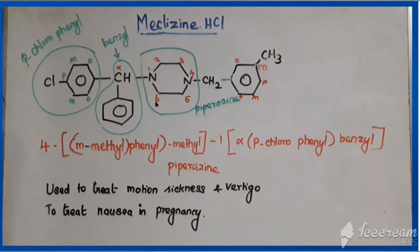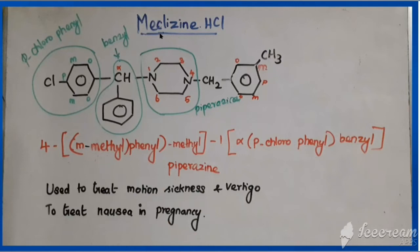The chemical name of meclizine: piperazine is the parent; the fourth position carries the meta-methylphenyl-methyl group and the first position carries the alpha-parachlorophenylbenzyl group, giving: 4-(meta-methylphenyl-methyl)-1-(α-parachlorophenylbenzyl)piperazine. Meclizine is used to treat motion sickness and vertigo, and also to treat nausea in pregnancy. The difference from chlorcyclizine is that one H is replaced by a meta-methylphenyl group.